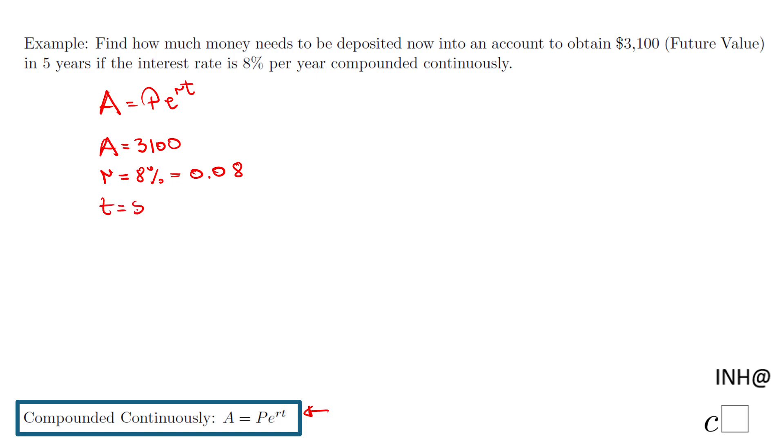So those are the things I'm going to plug in. In this formula, we have 3,100 equals P, the thing we need to find out, how much money needs to be deposited, times E to the power of 0.08 times 5.